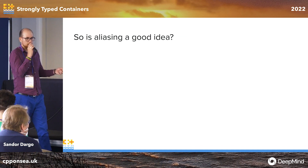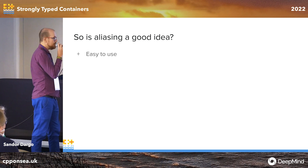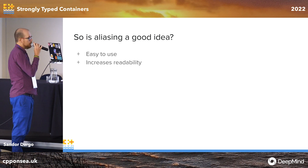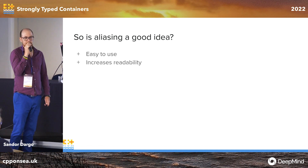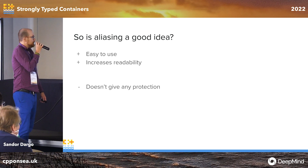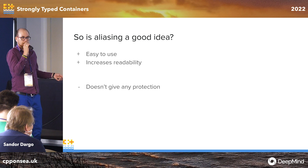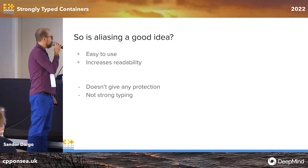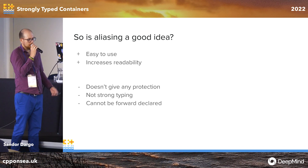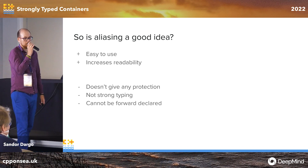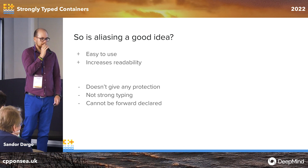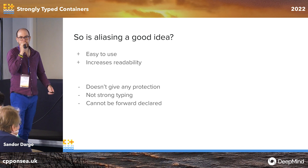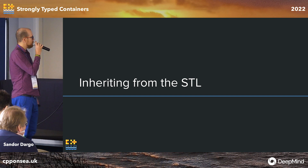So, is aliasing a good idea? Well, it's very easy to use, and it already increases the readability. But it doesn't give you the extra protection we were looking for — it's not strong typing. And as mentioned, it cannot be forward declared. Probably it's something you can use as a first step to make your code a bit more readable, but I wouldn't go with this as a long-term solution.